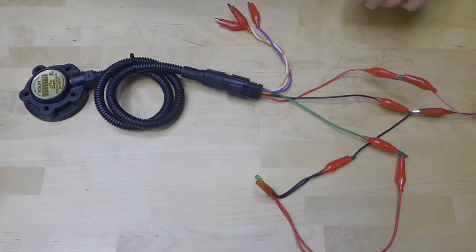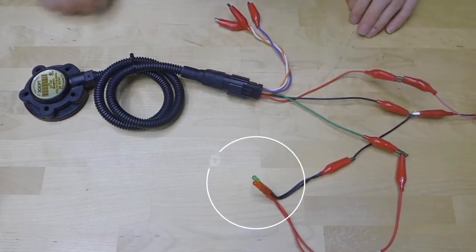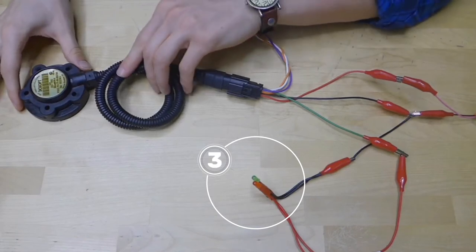But in bucket mode, only one discrete output is needed: the green one. Now let's move the probe to it.